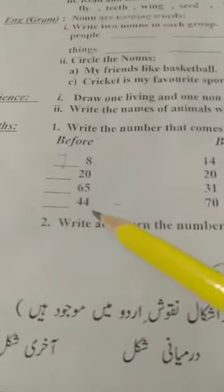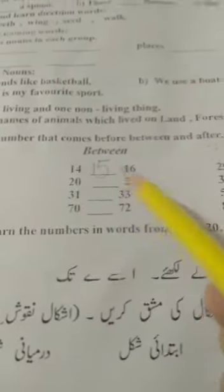So, in this way, you can find all the number which is comes before 20, 65, 44, 22, 20.